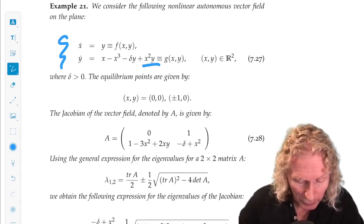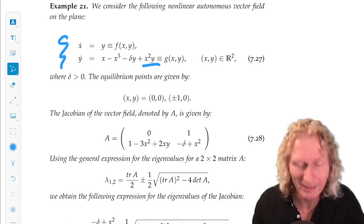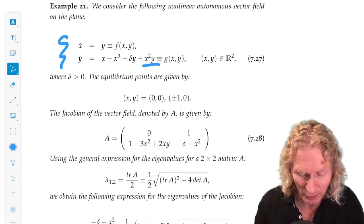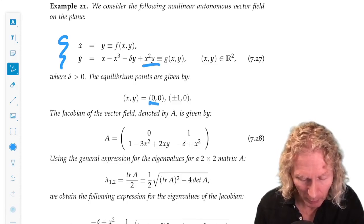But that doesn't change the equilibrium points at all. The equilibrium, it doesn't change their location, it does change their stability. There's three equilibrium points at the origin and at plus or minus 1, 0.